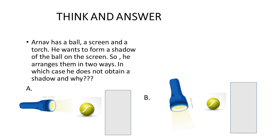Arunav has a ball, a screen and a torch. He wants to form a shadow of the ball on the screen. So, he arranges them in two ways. Children, in which case does he not obtain shadow? And can you give reason why the shadow is not obtained?